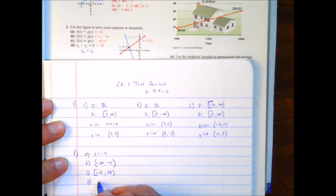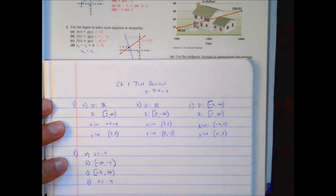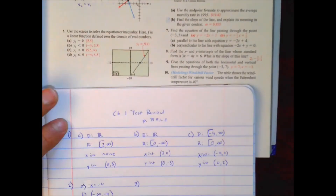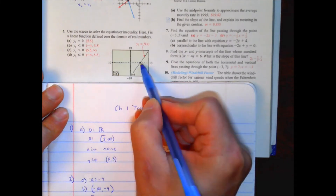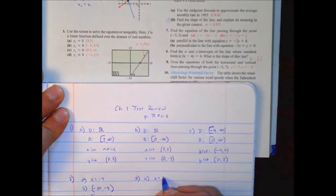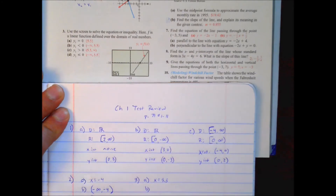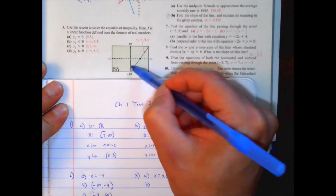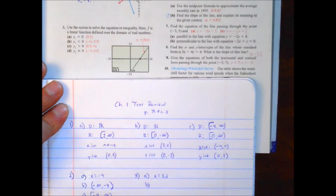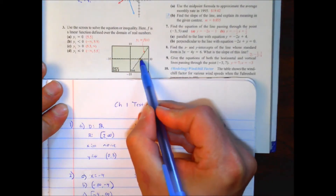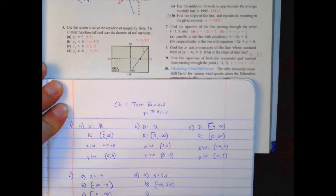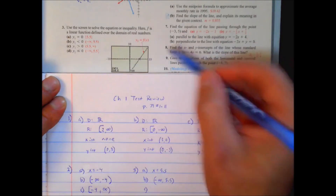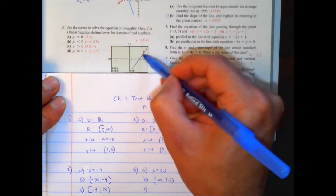Number 3 — same sort of idea, but it's one equation. The key point is 5.5. Part a: where is the output less than 0? That means x values from negative infinity all the way up through positive 5.5 — so from negative infinity to 5.5. Part c: where is it greater than 0? The outputs are positive beyond 5.5, so from 5.5 to infinity. Part d: where is it less than or equal to 0? Same as part a, but including 5.5, so from negative infinity to 5.5 with a bracket.